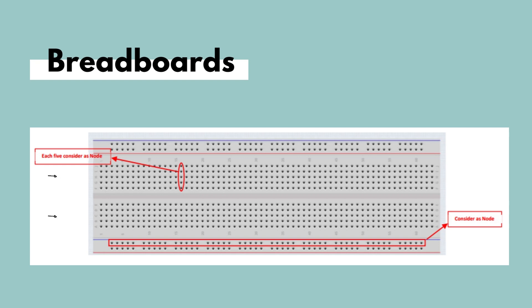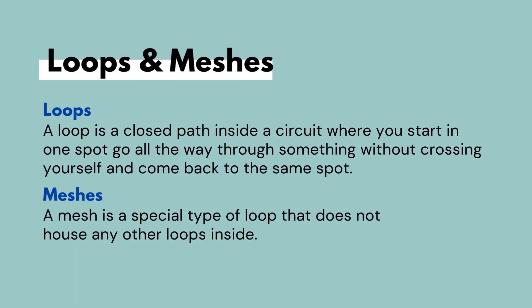First, let's take a look at loops and meshes. A loop is a closed path inside a circuit where you can start at one point, travel all the way through without crossing yourself, and come back to the same point. On the other hand, a mesh is a special type of loop that does not house any other loops inside it.